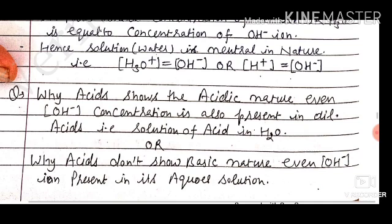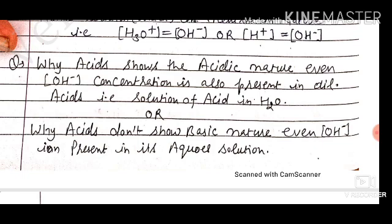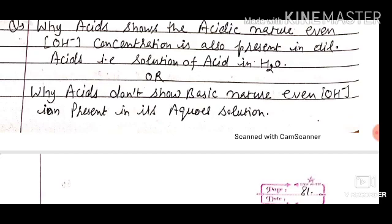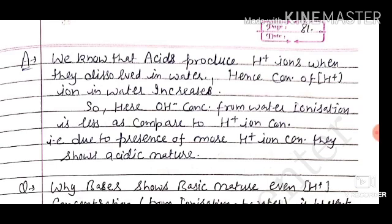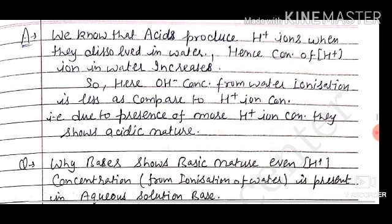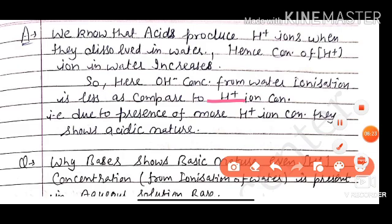Why do acids show acidic nature even though OH-ion concentration is also present in dilute acid? Acids produce H-ions when they dissolve in water, so the H-ion concentration in water increases. The OH-ion concentration from water's self-ionization is less compared to the H-ion concentration produced by the acid, and that is why the solution shows acidic nature.